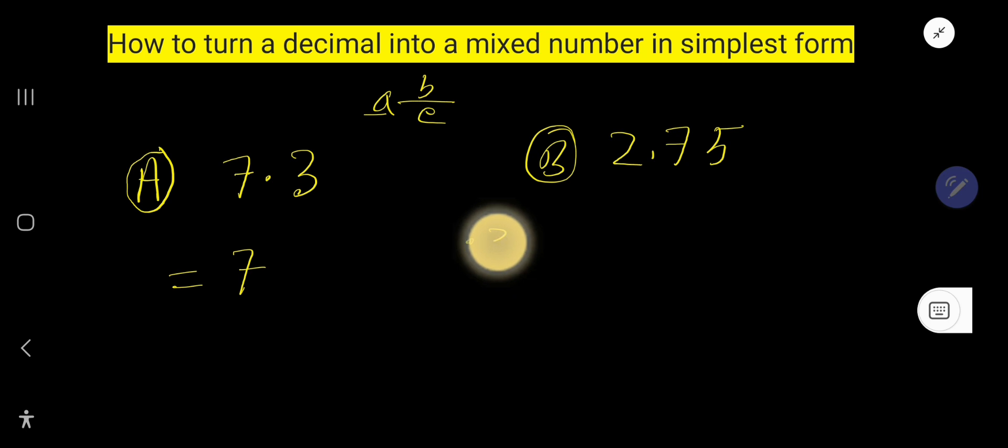So if you convert 0.3 as a fraction, what will happen? Just remove the decimal point and write the number you are getting. Here we are getting 3, and for every digit after the decimal, we have to consider 10.